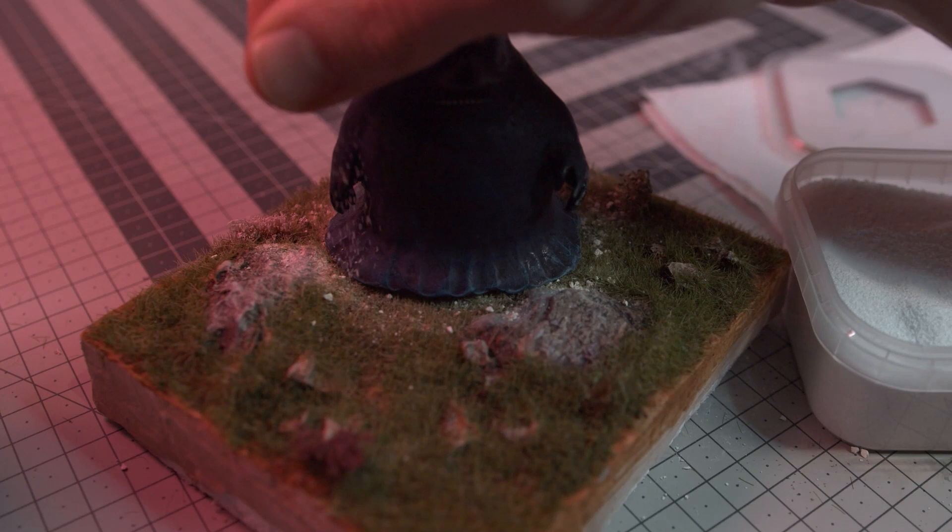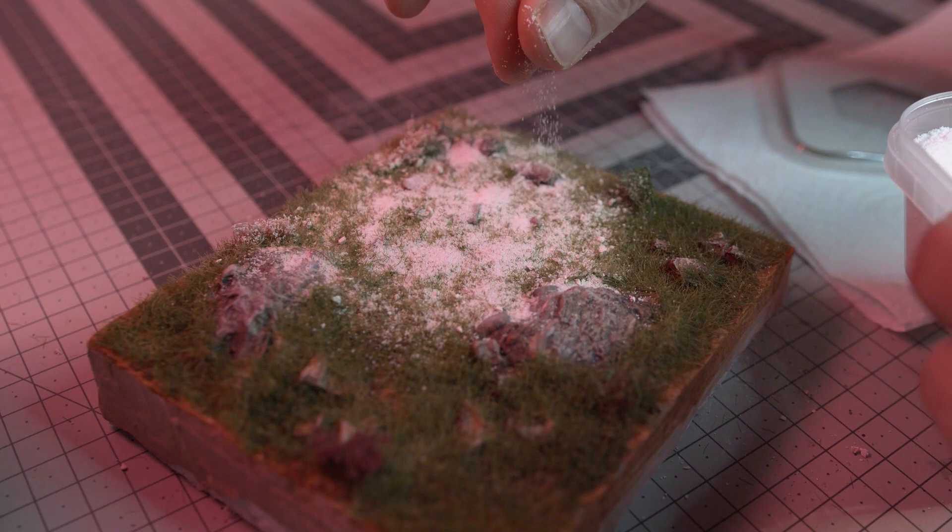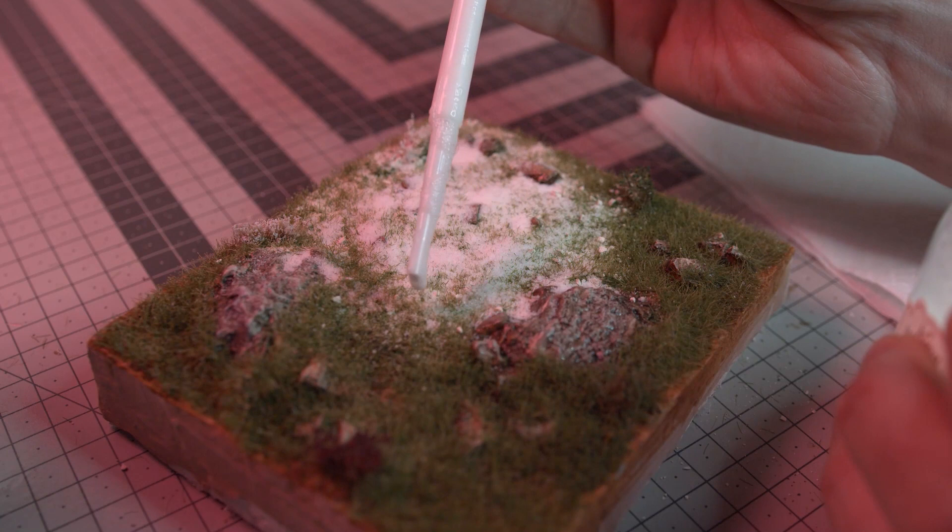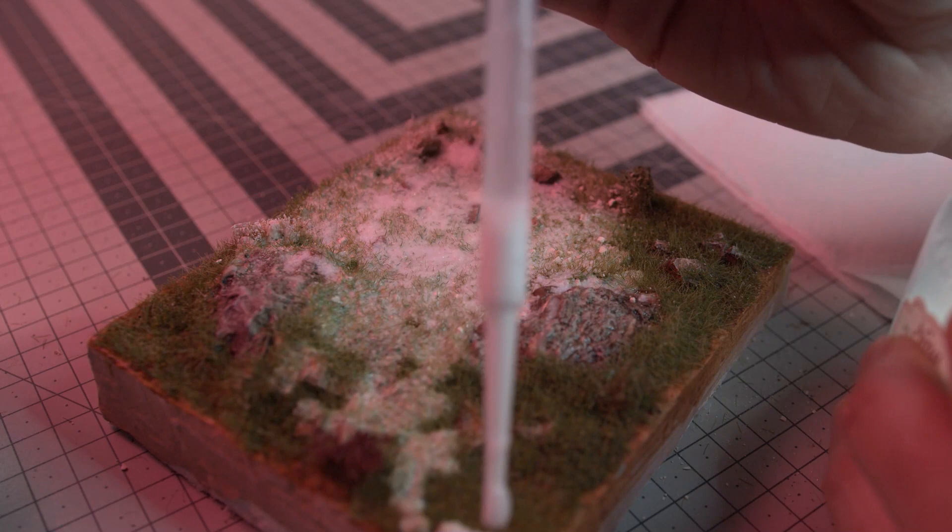I spray a liberal amount of isopropyl alcohol, then add a water and mod podge mix to everything. This seals the snow and any loose static grass or flocking to the base.